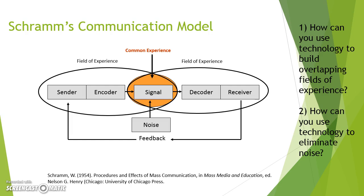For example, maybe I don't just verbally communicate directions to students — perhaps I have written directions as well, or a demonstration. So what are some ways I can use technology to limit, reduce, or even alleviate noise that's interfering with that signal? These are things to think about when considering your content area and how different technologies may or may not be useful for conveying the information you want to get across to students.